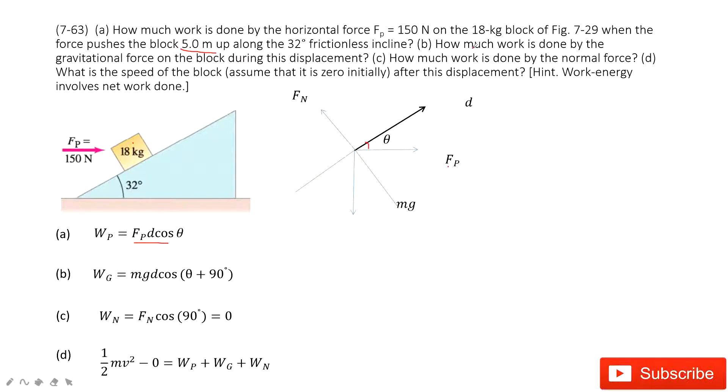The next one, how much work is done by the gravity. So the gravity is mg. We can see mg is given because the mass is given. The next one, mg with the d. So it's mg d cosine the angle between mg and d. How much?